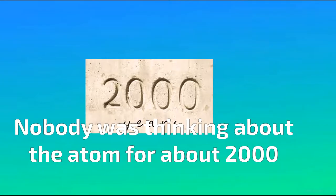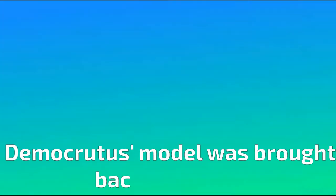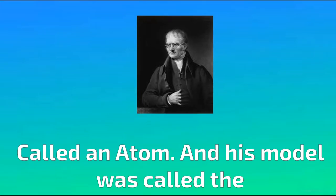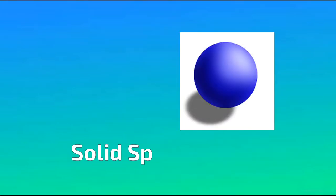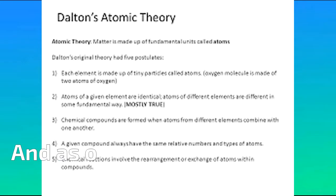Nobody was thinking about the atom for about 2,000 years after that, and Democritus' model was brought back by Dalton in the 1800s, called an atom, and his model was called the solid sphere model. He had these five postulates of matter, and as of now, three have been proven wrong, but two still stand.